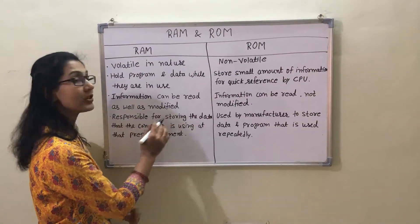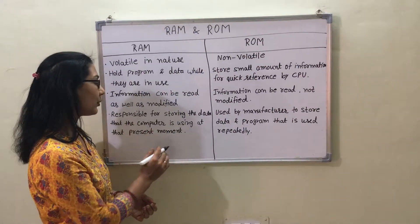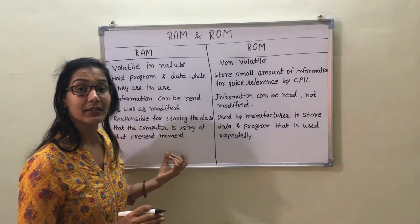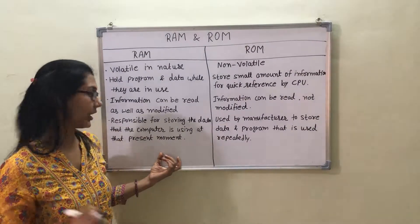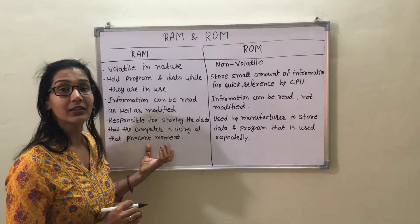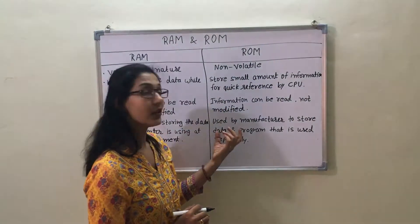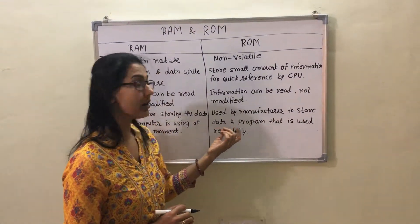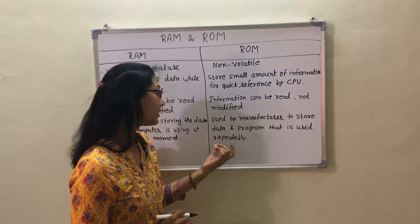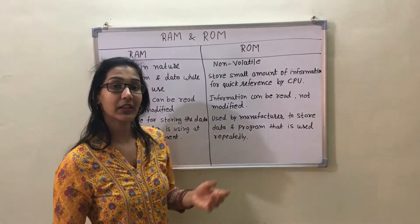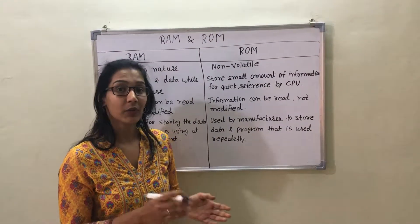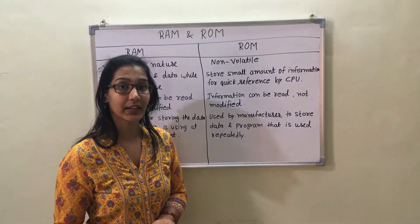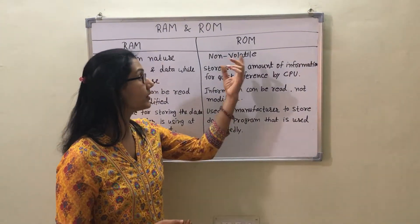RAM is responsible for storing the data that the computer is using at the present moment — it is temporary in nature and is used by end users. While ROM is used by manufacturers to store data and programs that are used repeatedly, for example, BIOS programs, programs related to operating systems, and translators.